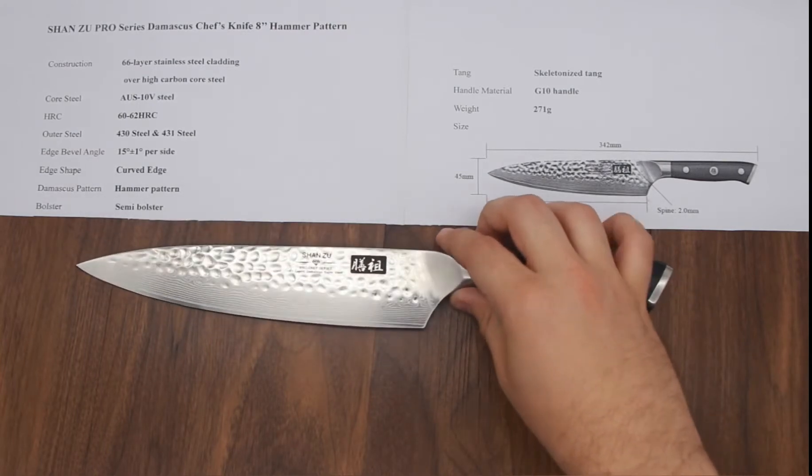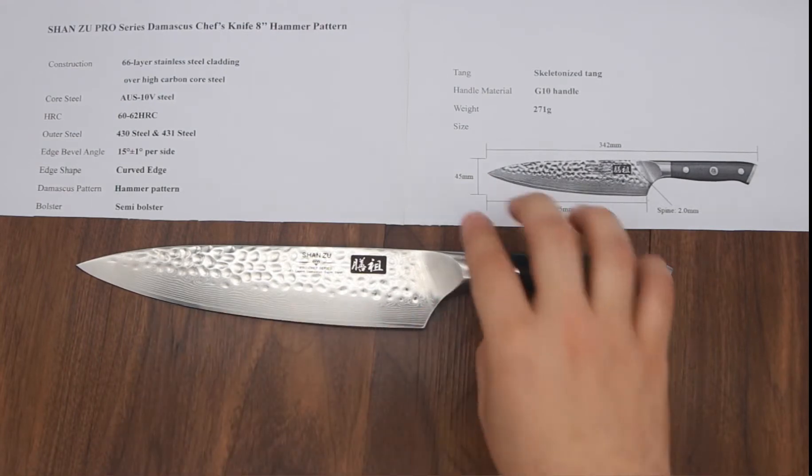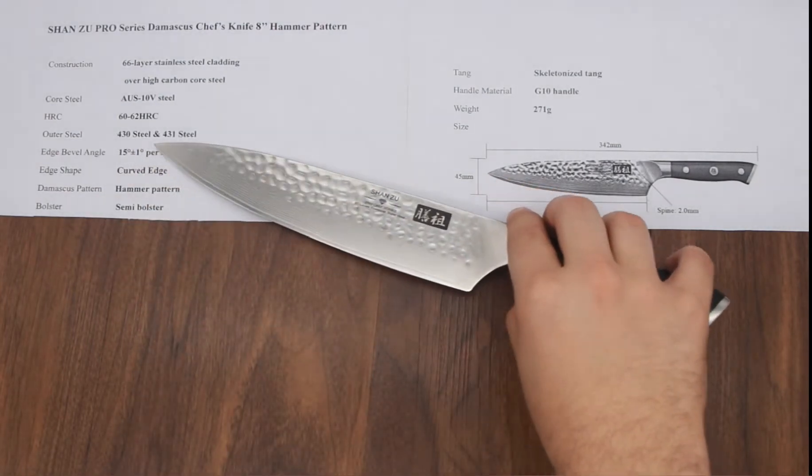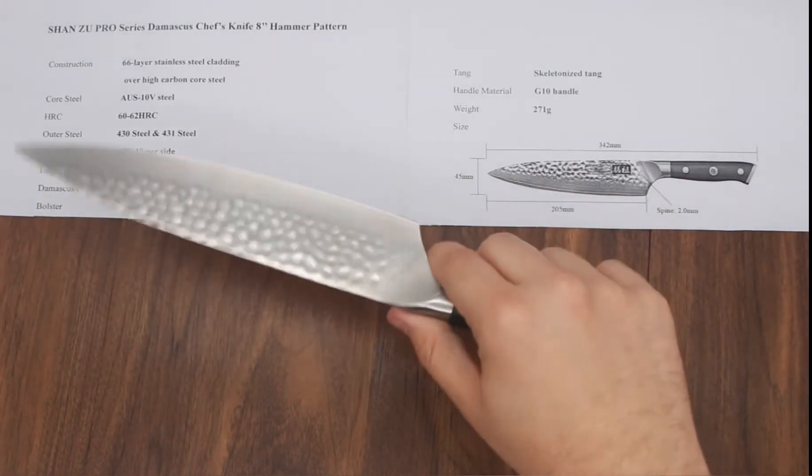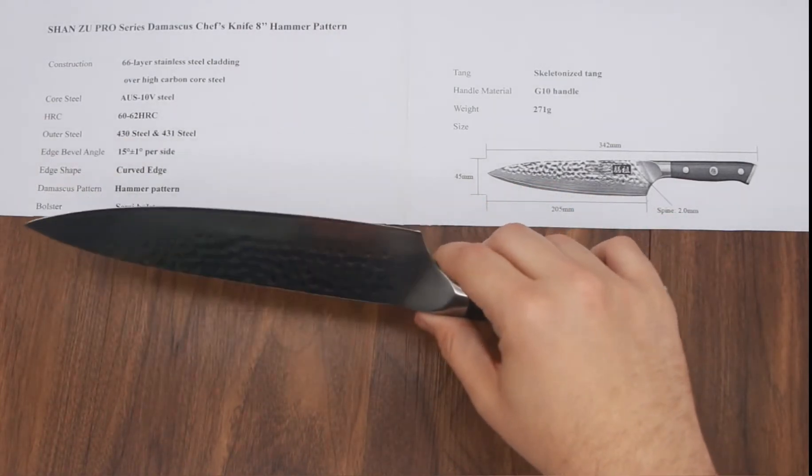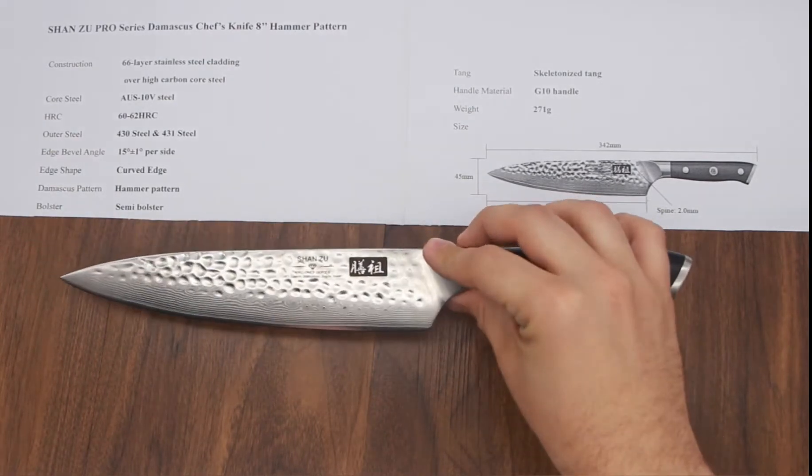It also excels at always giving you a razor sharp cut. Now, as for the outer layers, these are 430 and 431 stainless steel. These are characterized for being very good at corrosion resistance and general atmospheric corrosive elements. So they prevent the core from rusting and therefore it requires less maintenance overall.